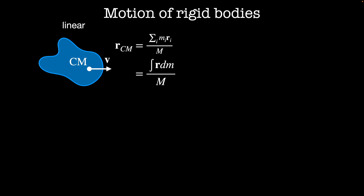The center of mass, R_CM, is defined for discrete particles as the sum over i of the mass of the i-th element times the position of the i-th element, divided by their total mass. For continuous systems, we can turn this sum into an integral of the position vector r times the infinitesimal mass unit dm, divided by the total mass.